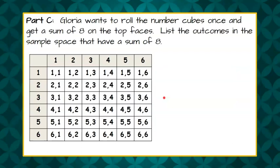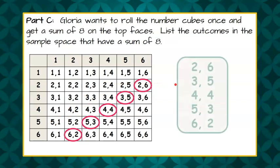Part C: Gloria wants to roll the number cubes once and get a sum of eight on the top faces. List the outcomes in the sample space that have a sum of eight. I've brought forward our sample space here. The ones that come up with a sum of eight are: 2 and 6, 3 and 5, 4 and 4, 5 and 3, and 6 and 2. You can see that they form a diagonal line — these diagonals all have the same sum. So our outcomes are: (2,6), (3,5), (4,4), (5,3), and (6,2). There are five different rolls you can get with these two number cubes that will have a sum of eight.